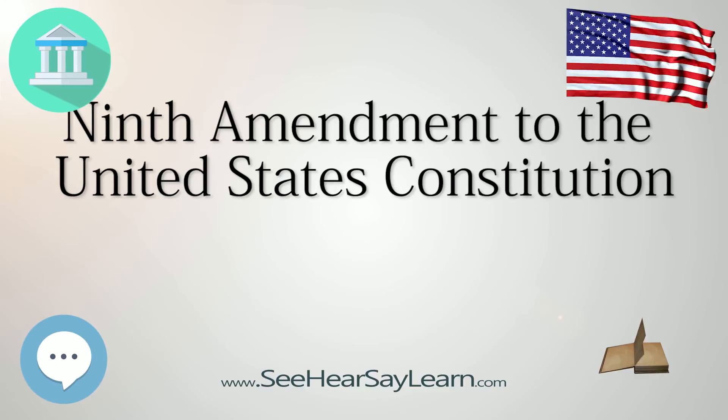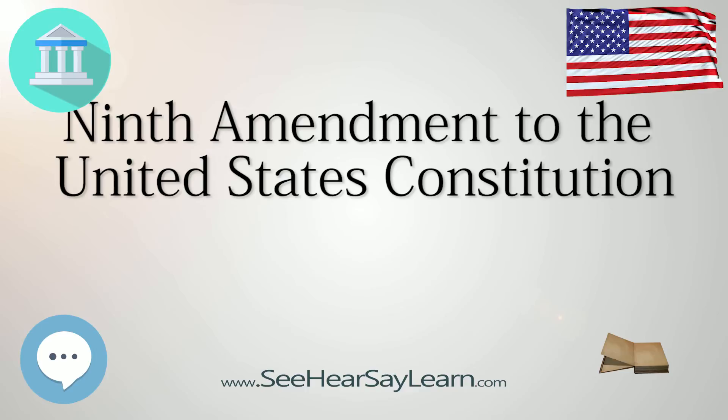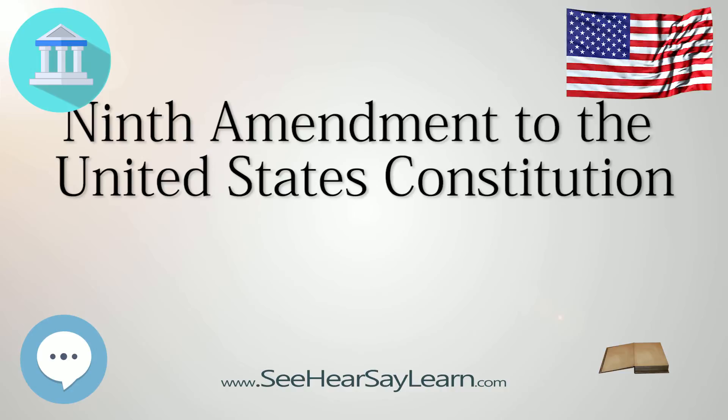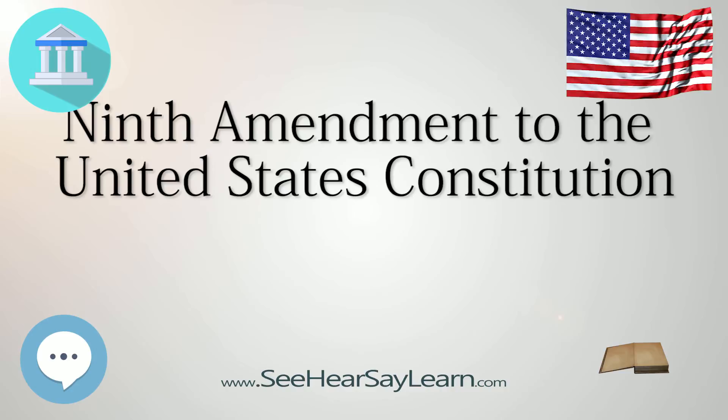Recapitulation. The Ninth Amendment explicitly bars denial of enumerated rights if the denial is based on the enumeration of certain rights in the Constitution, but this amendment does not explicitly bar denial of enumerated rights if the denial is based on the enumeration of certain powers in the Constitution. It is to that enumeration of powers that the courts have pointed, in order to determine the extent of the enumerated rights mentioned in the Ninth Amendment.